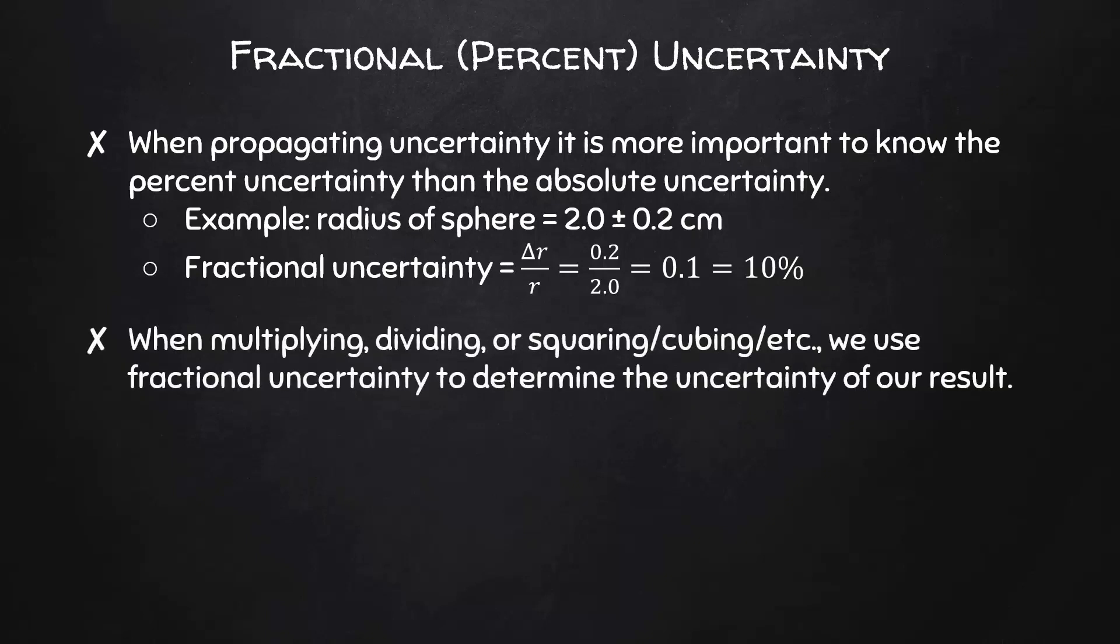When multiplying, dividing, or squaring, cubing, etc., we use fractional uncertainty to determine the uncertainty of our result. To generalize, if y equals a times b divided by c, then the uncertainty of y equals the fractional uncertainty of a plus the fractional uncertainty of b plus the fractional uncertainty of c.